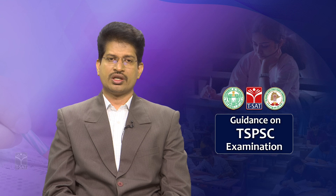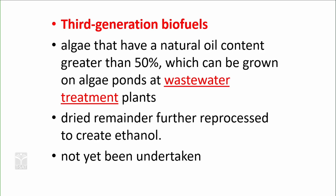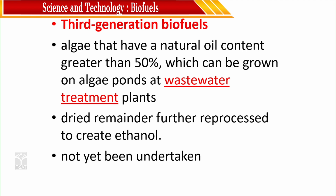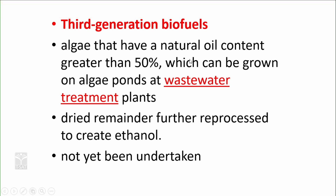In third generation biofuels, we use algae, which contains 50% oil, to generate biodiesel. This algae can be cultivated using sewage water after treatment, so it does not consume water essential for irrigation or drinking — it uses wastewater. The algae waste after extracting oil can also be burned to generate energy. The oil is extracted to generate biodiesel through the process of esterification.